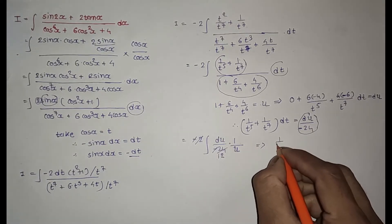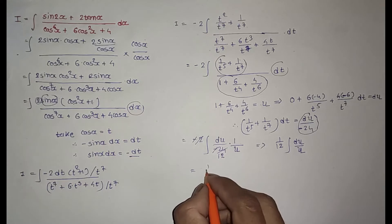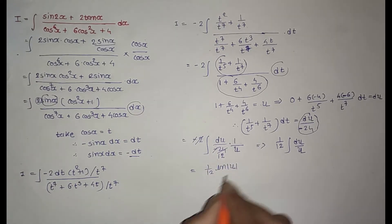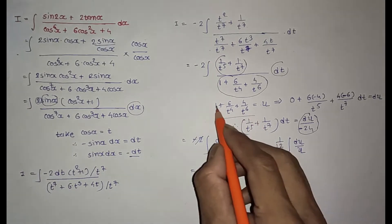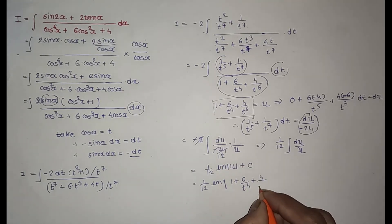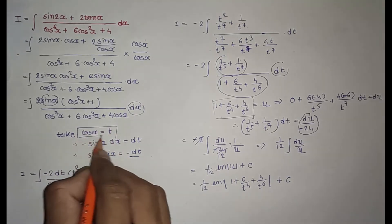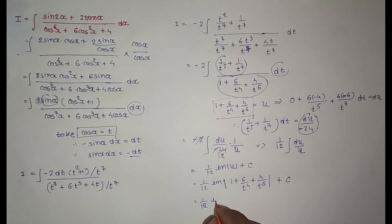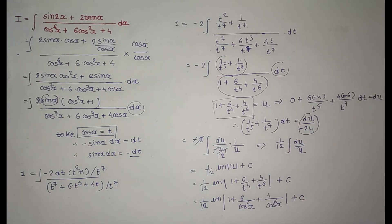This is very easy: 1/12 × ln|u| + C. Substituting back u = 1 + 6/t^4 + 4/t^6, and then t = cos x, the final answer is (1/12) ln|1 + 6/cos^4 x + 4/cos^6 x| + C.